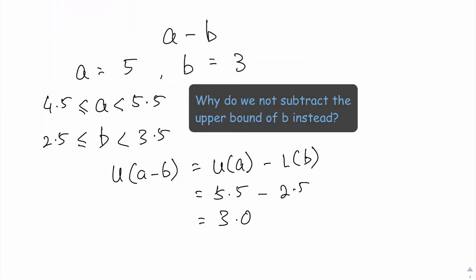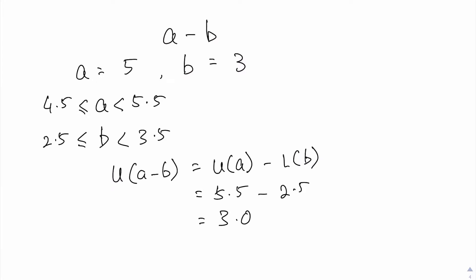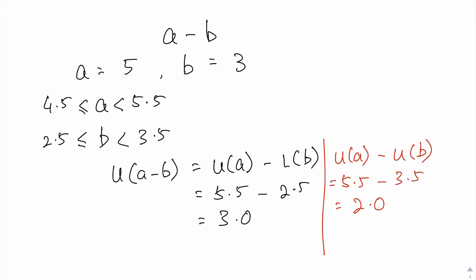Now you may wonder why I do not subtract the upper bound of b — instead I subtract the lower bound of b. To show you why, let us do an alternate solution where I take the upper bound of a minus the upper bound of b: 5.5 minus 3.5 gives 2.0. You can see that 2.0 is less than 3.0, because subtracting the upper bound of b gives a smaller number. If I subtract the lower bound of b instead, I get a larger number, and that is precisely why I subtract the lower bound of b.